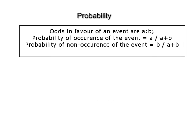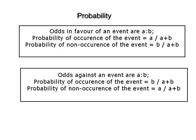If odds in favor of an event are A to B, then the probability of the occurrence of that event is A/(A+B), and the probability of non-occurrence is B/(A+B). If odds against an event are A to B, then the probability of the occurrence of that event is B/(A+B) and the probability of non-occurrence is A/(A+B).